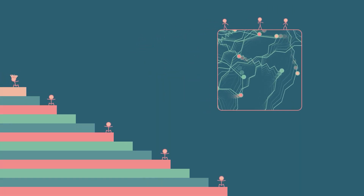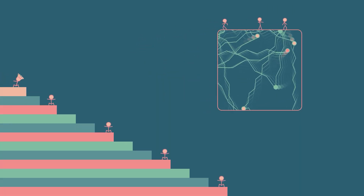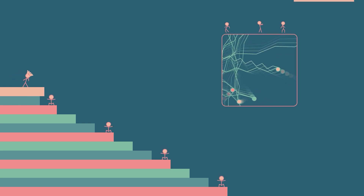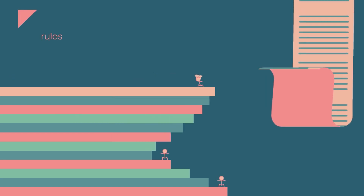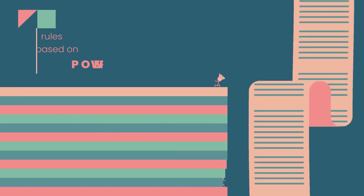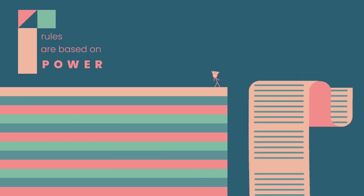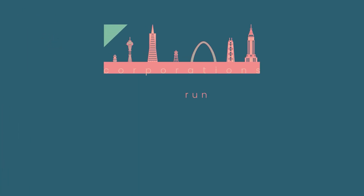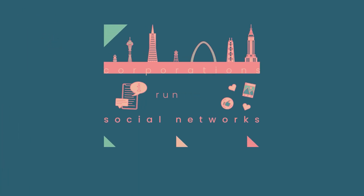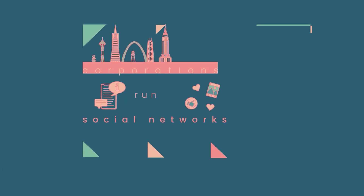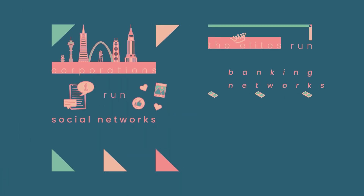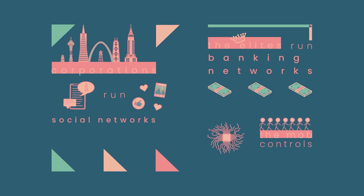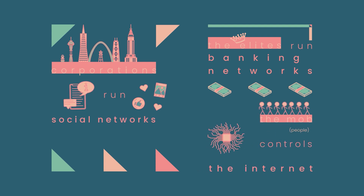The rulers of these networks become the most influential people in society. Rules are closed to outsiders and based on power. Corporations run many, like the social networks. The elites run banking networks. And the mob controls the internet.